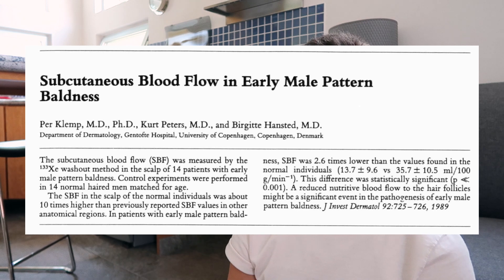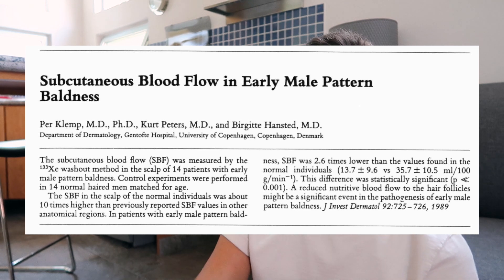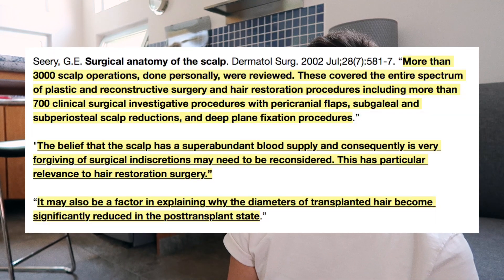I'd encourage anybody to read this paper — you can find the abstract on PubMed or read the full text on Sci-Hub. A paper referenced in the Goldman paper also states that a reduced nutritive blood flow to the hair follicles might be a significant event in the pathogenesis of early male pattern baldness. And oddly enough, in 2002 I stumbled upon a surgeon discussing reconstruction of the galea, who went on a tangent noting that reduced blood flow was an obvious feature of male pattern baldness — saying the belief that the scalp has a superabundant blood supply may need to be reconsidered.